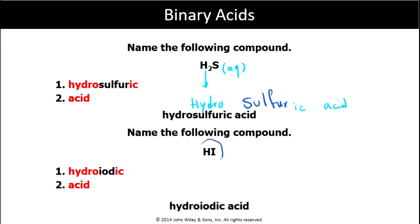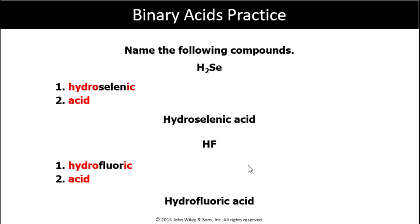Next one: HI, another binary acid. Hydro at the beginning, -ic acid at the end, and the name of the non-metal in the middle — iodine. We drop '-ine' because we are going to add to the root. So we call that hydroiodic acid. For acids, we always have -ic acid as the suffix.